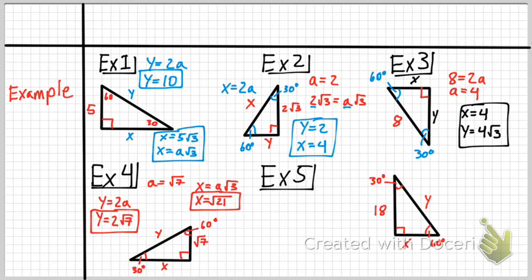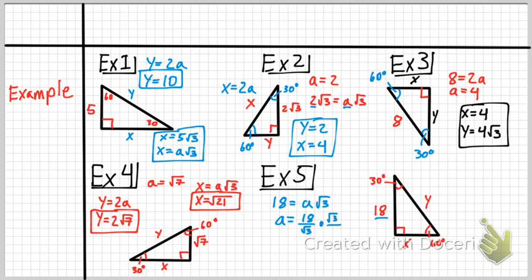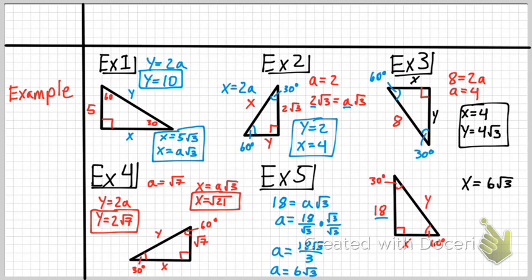For example 5, the long leg is 18, so 18 equals A√3. Therefore A equals 18 divided by √3. To rationalize, multiply top and bottom by √3: A equals 18√3 over 3, which simplifies to 6√3. So x equals 6√3. Then y equals 2A, so y equals 2 times 6√3, giving y equals 12√3.